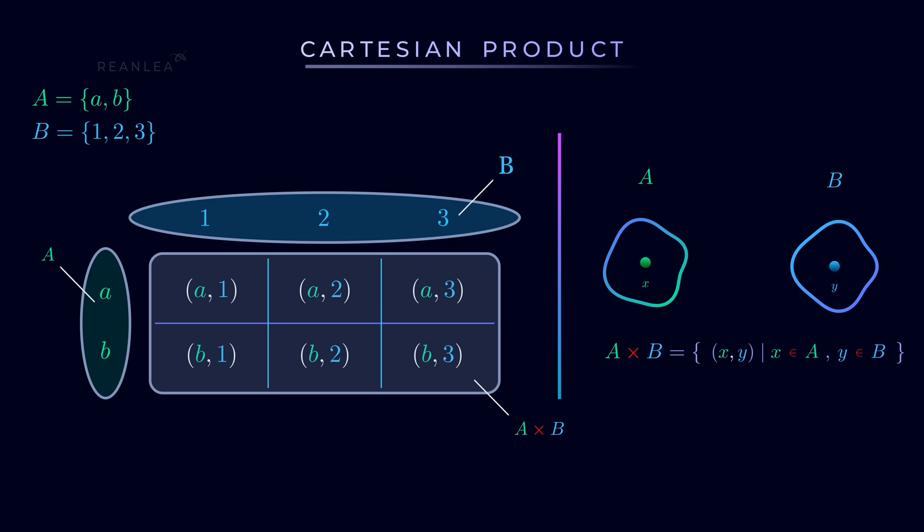If we consider A to be a set collection of two distinct numbers 2 and 4, then their Cartesian product will contain all the ordered pairs on this table. This further will lead us to the Cartesian coordinate system.